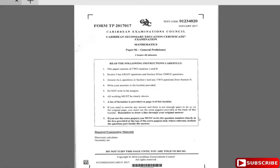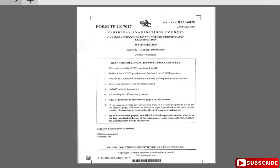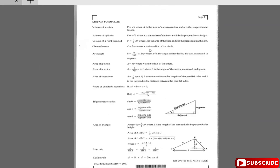2017 January Paper 2. This paper has two sections: section one has eight questions and you do everything. Section two has three questions and you choose two — questions nine, ten, and eleven. Question eleven is vectors and matrices, question ten is trigonometry, and question nine is relations, functions, velocity-time graphs, or kinematics — motion in a straight line. There's a formula sheet, so let's get into the January paper solution.